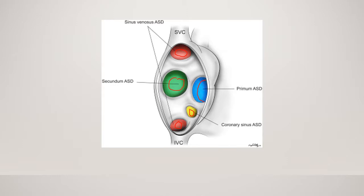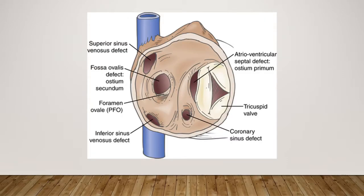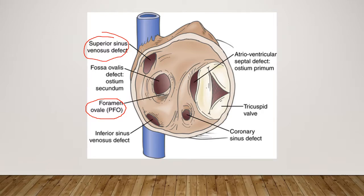A third view points out everything, including the sinus venosus. There are discussions about whether a patent foramen ovale, or PFO, is truly an ASD. It is shunting flow, so it could be considered one. A PFO is really a flap of tissue that opens and closes during the normal heartbeat and lets flow go through it.